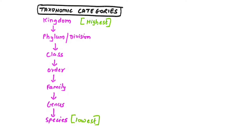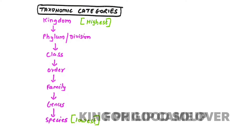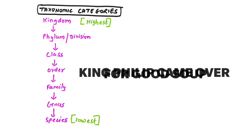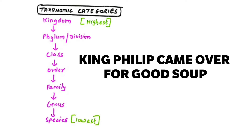The lowest taxonomic category is species. Starting from top to bottom, we move from kingdom to phylum, to class, then order, family, genus, and species. In species you will find all characteristics similar, but in kingdom you will find very few similar. To remember this order, use the mnemonic: 'King Philip Came Over For Good Soup' — Kingdom, Phylum, Class, Order, Family, Genus, Species.